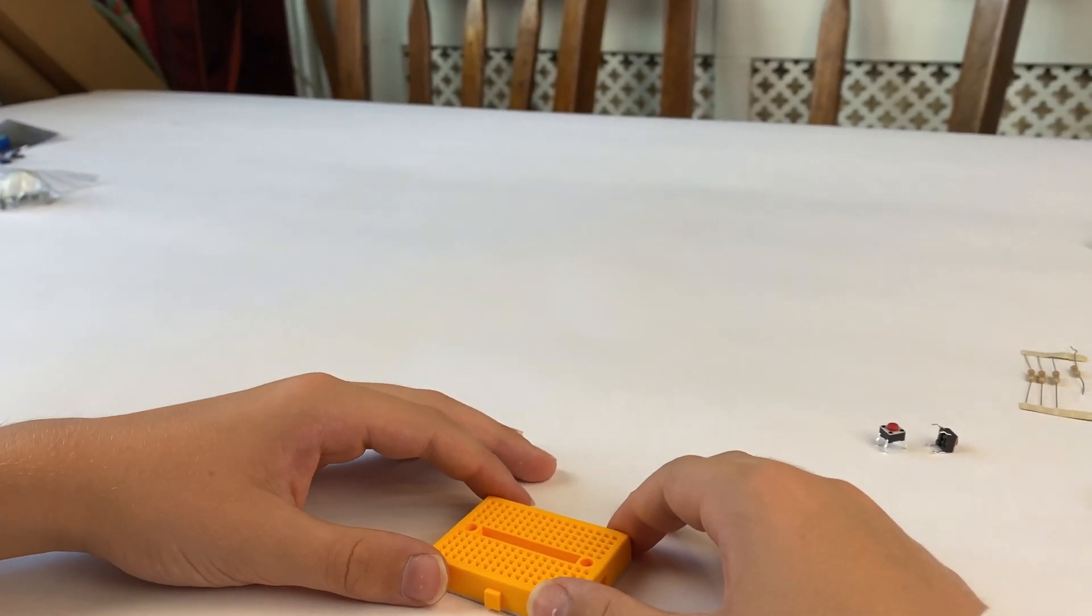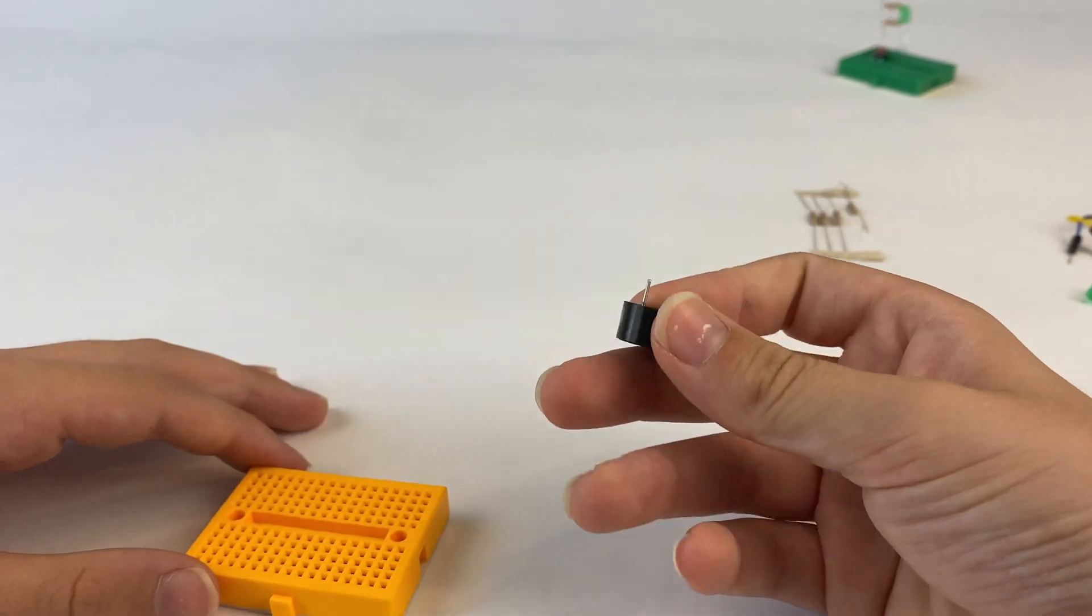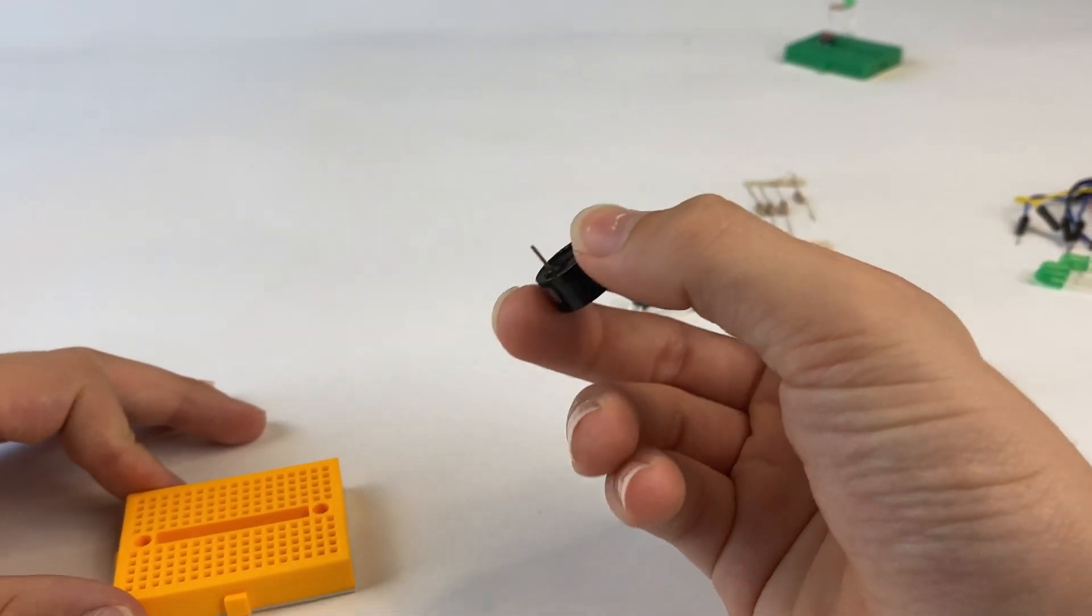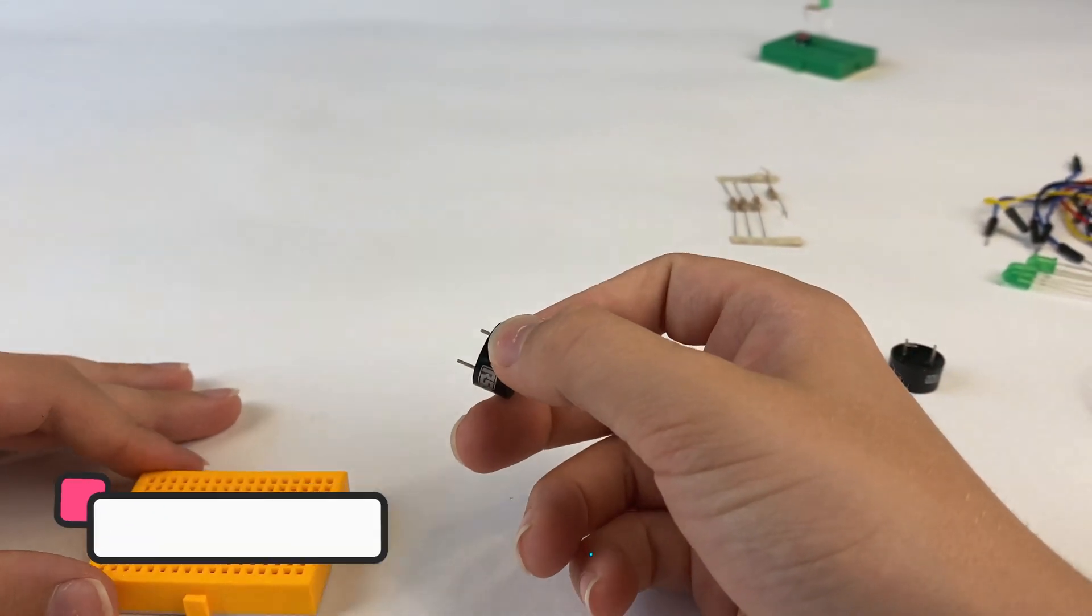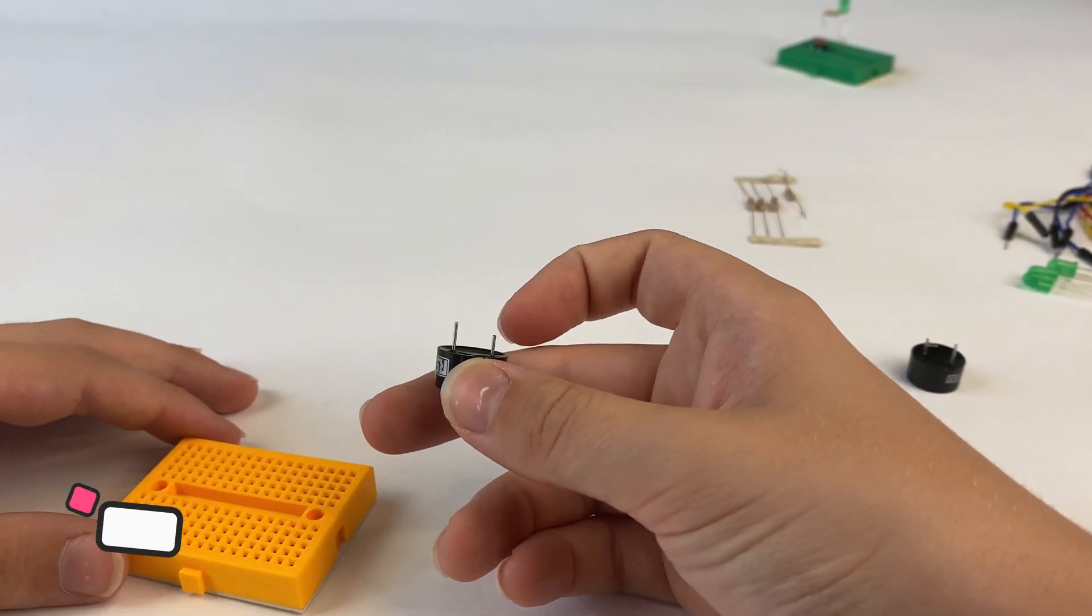Now we're going to make a simple buzzer circuit. If we get a buzzer, like with the LED, there's a long wire and short wire. The long wire is positive and short wire is negative.